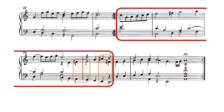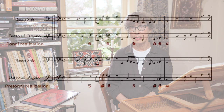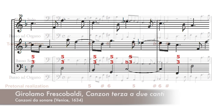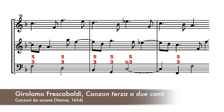Let's now return to the beginning of our bass canzona and discuss its pre-tonal realisation in more detail. On the first beat of the second bar, over an F, I suggest 5-3 instead of 6-3. As we saw already, the use of many 5-3 chords is a typical feature of early continuo realisation and one of the essential differences with 18th-century practices. It applies not only to bass notes set a fourth or a fifth apart, but often for leaps of a third as well, as we can see in this example of Frescobaldi's Canzon Terza and Due Canti.